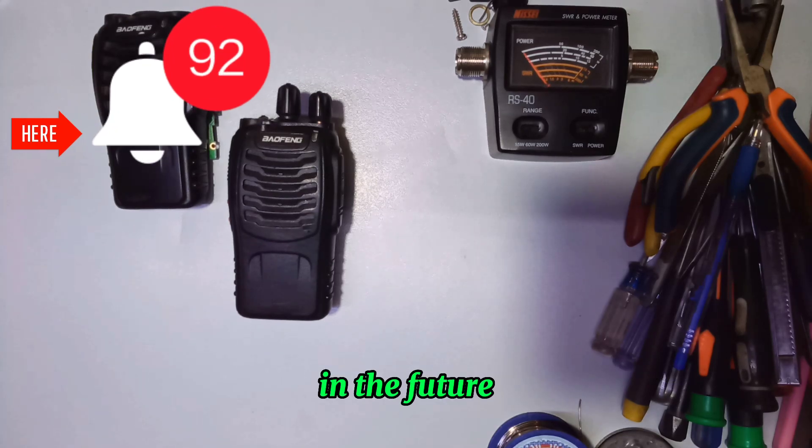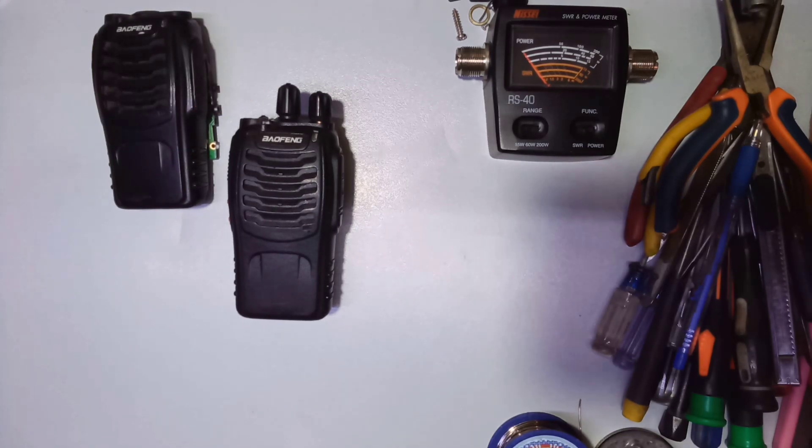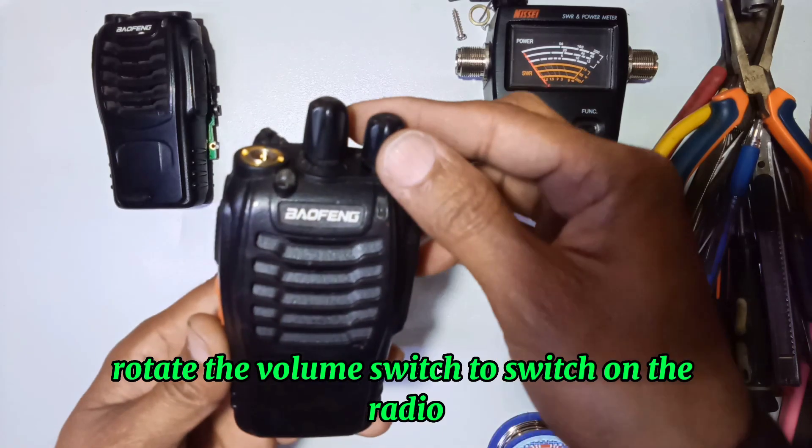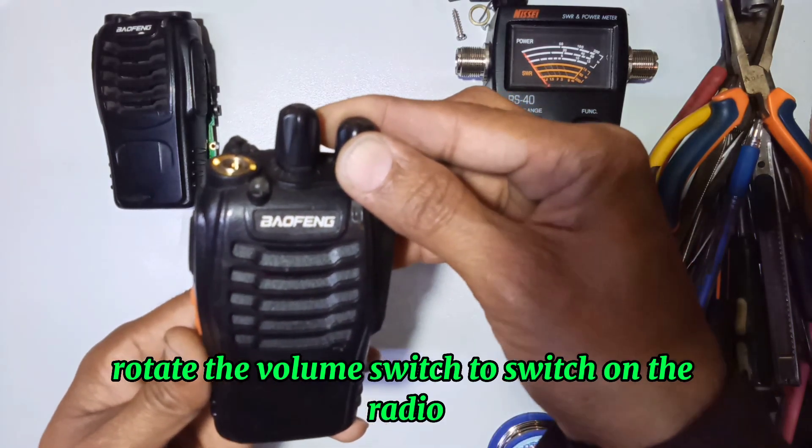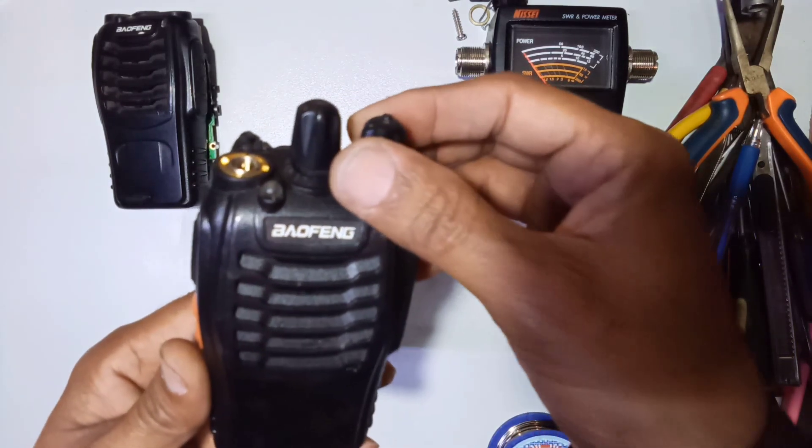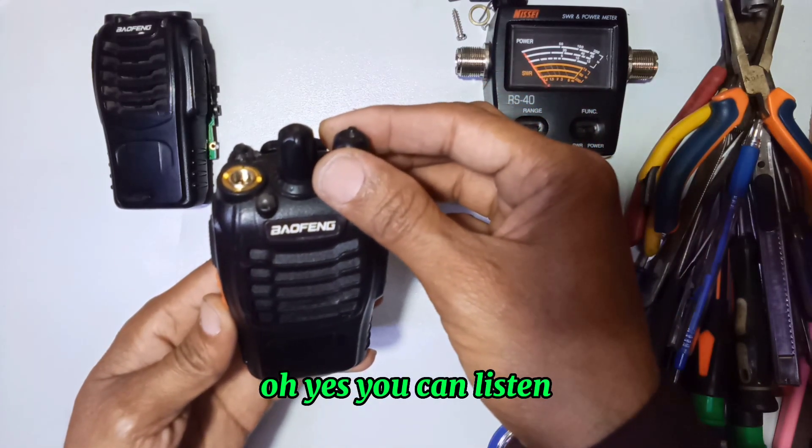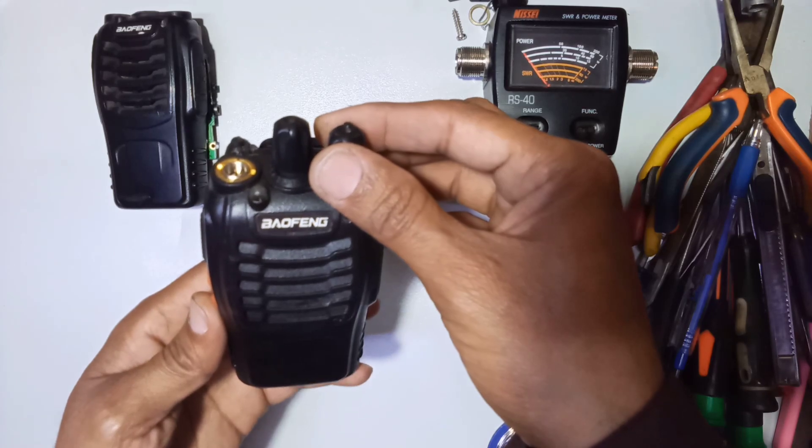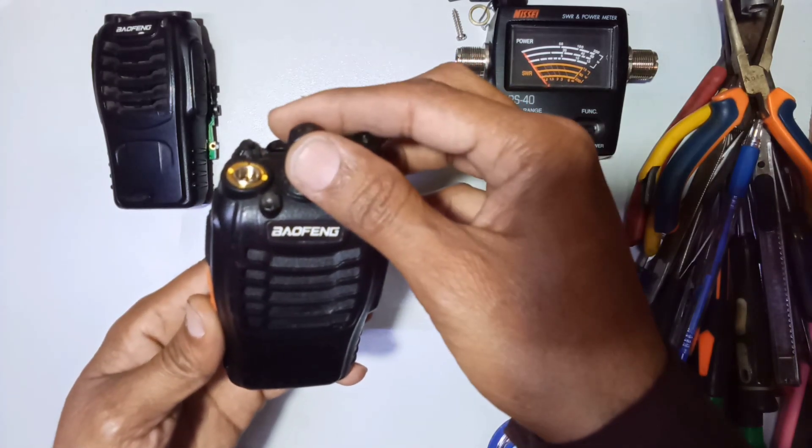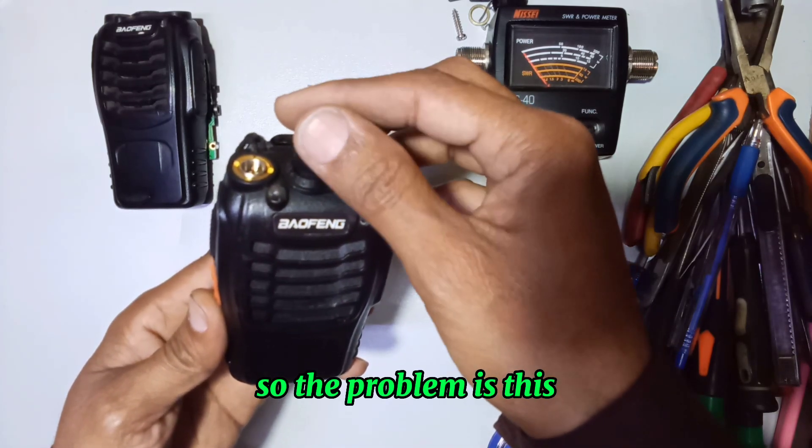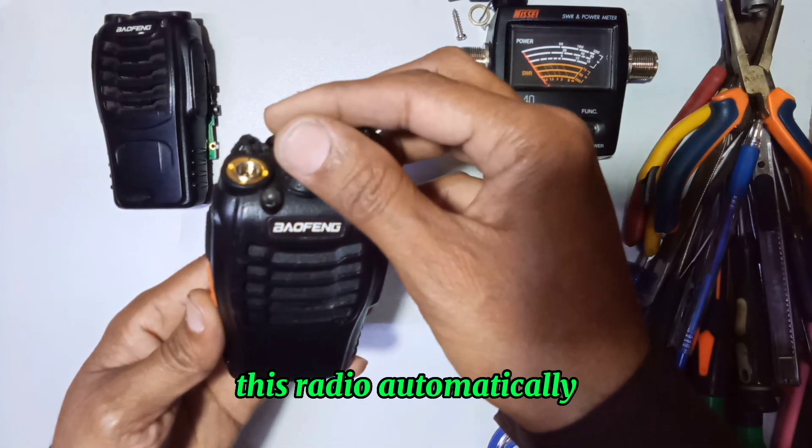Let's start the video. So this is the radio. Rotate the volume switch to switch on the radio. Oh yes, you can listen. The problem is this, this radio automatically changes channel without touching the channel knob.